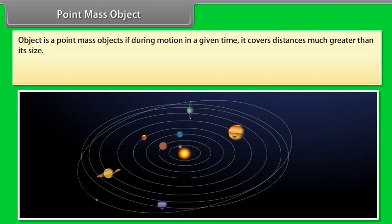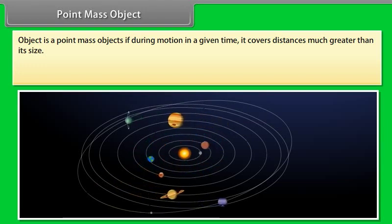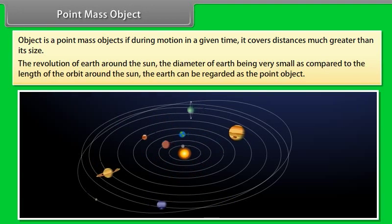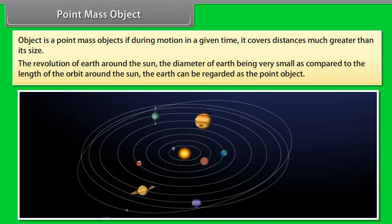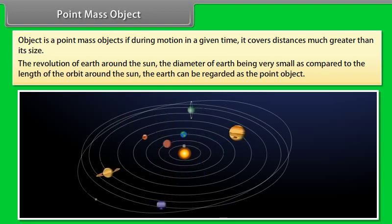Point mass object: An object is a point mass object if during motion in a given time it covers distances much greater than its size. Example: the revolution of Earth around the Sun — the diameter of Earth being very small as compared to the length of the orbit around the Sun, the Earth can be regarded as a point object.